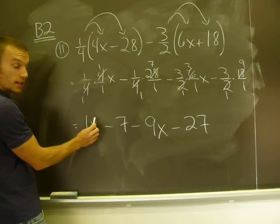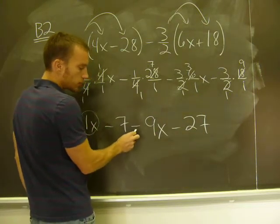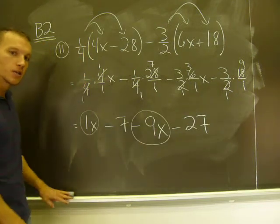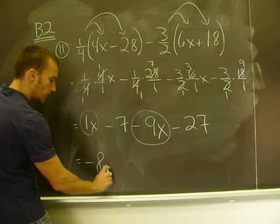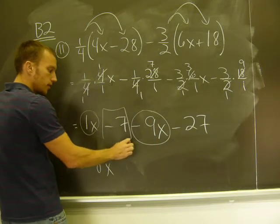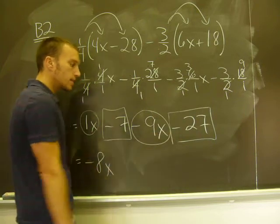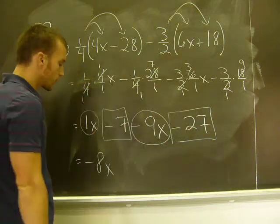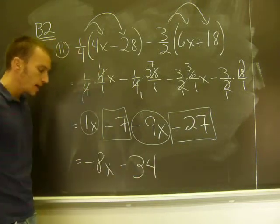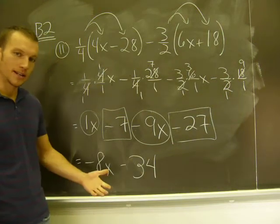So remember how I did this from the last chapter. What I like to do is circle my like terms. Remember to include the sign. That sign's attached to that term. I got one X minus nine X. One minus nine is negative eight. So that's my X term. What I like to do is box these number terms. Don't forget to include that sign. It's very important. Negative seven minus twenty-seven is negative thirty-four. And I've combined my X terms with my number terms. I got my one X term, one number term. And now I'm done. It doesn't get simpler than that.